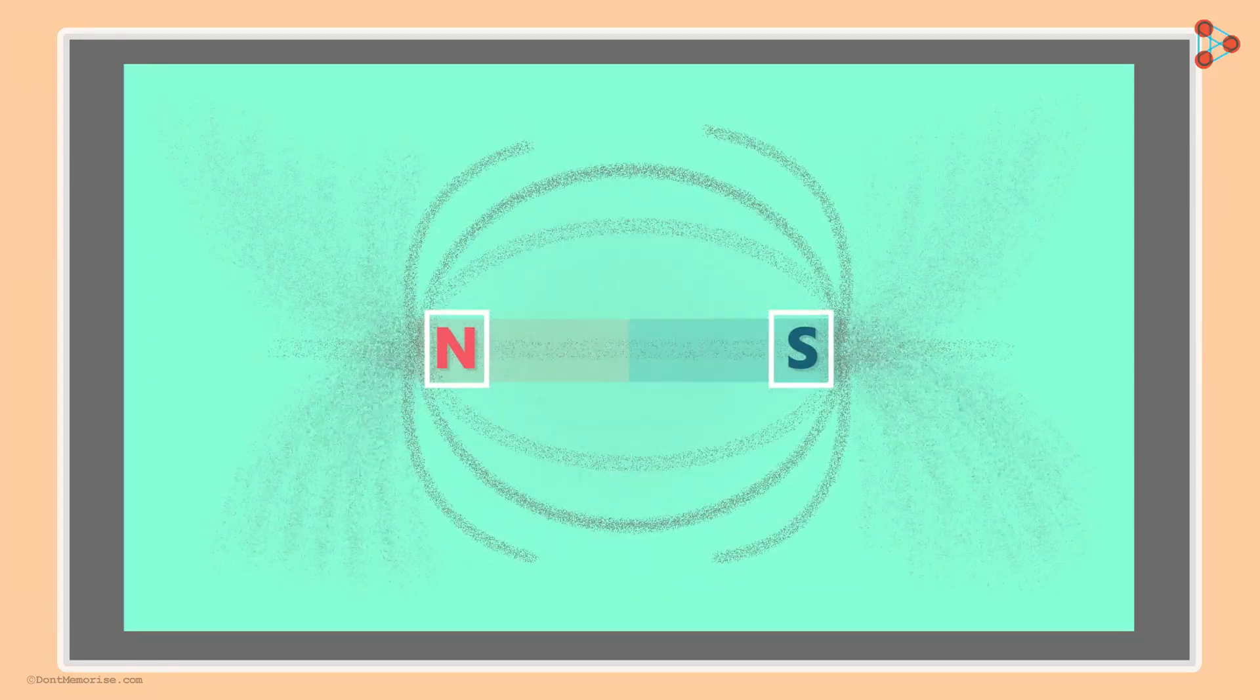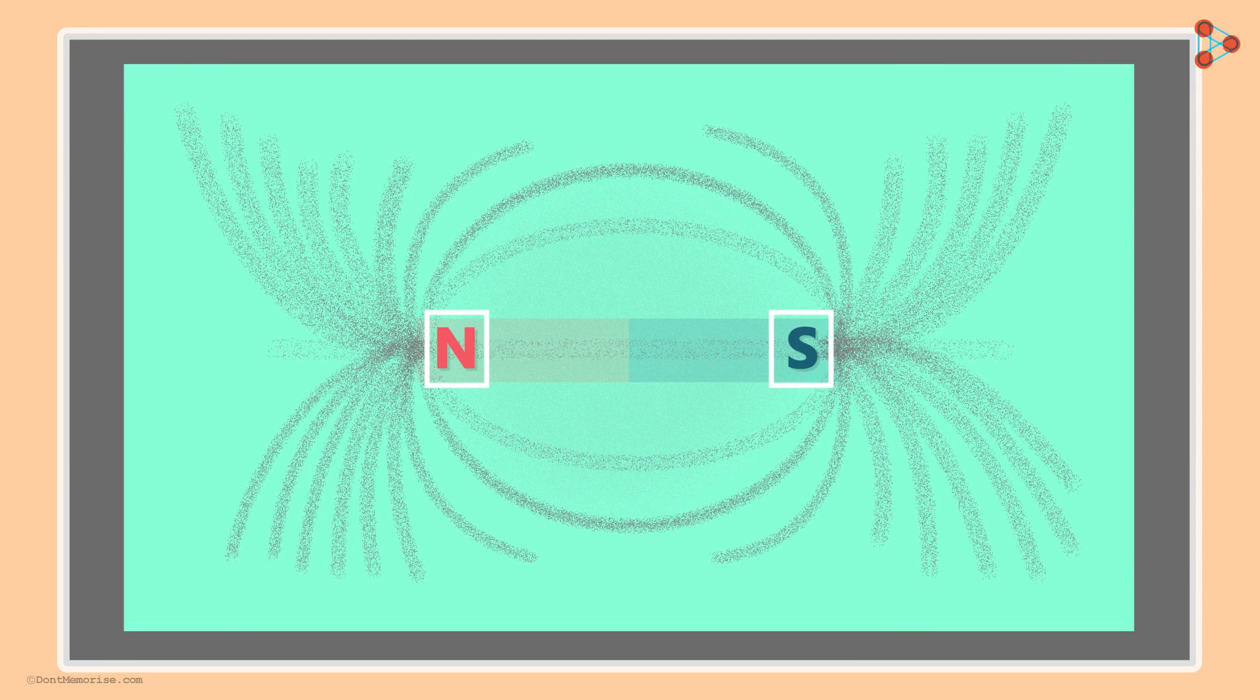What will we notice? We will find that the iron filings arrange themselves in a specific pattern. This pattern not only shows us the pattern but also tells us a lot about the strength of the magnetic field of a bar magnet.